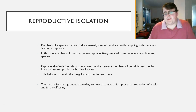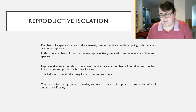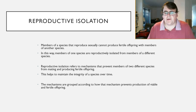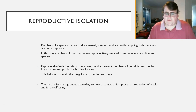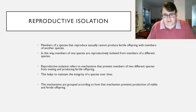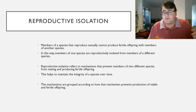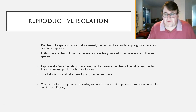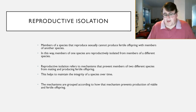Sometimes members of a species that reproduce sexually don't produce fertile offspring with members of another species — it's just physically impossible for them to create fertile offspring. We say that these species are reproductively isolated from members of different species. Reproductive isolation refers to the mechanisms that prevent members of two different species from mating and producing fertile offspring. It helps to maintain the integrity of a species over time.